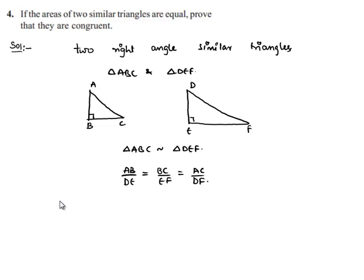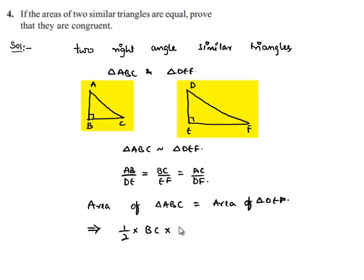Now let us find the ratio of two triangles. He has given that area of two similar triangles are equal, so area of triangle ABC is equal to area of triangle DEF. Then it becomes half times base BC into height AB is equal to half times base EF times height DE. That implies half and half will be cancelled on both sides of equality, and we can write this as BC by EF is equal to DE by AB.